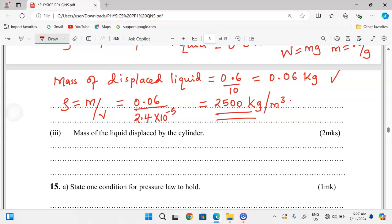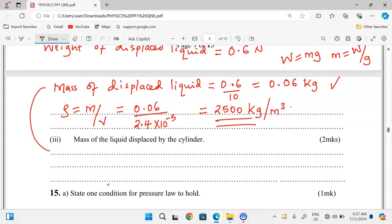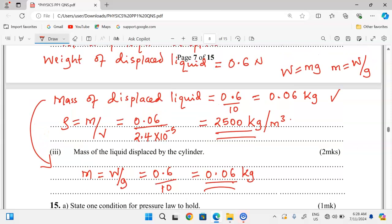And finally, there is mass of the liquid displaced. Remember mass of the liquid displaced has already been obtained here. Mass of the liquid displaced, I just need to transfer the value to this point, but a student is supposed to show that a mass has been obtained when weight has been divided by gravity. 0.6 divided by 10 to give us 0.06 kilograms. So this is mass in SI units for the liquid which was displaced by the cylinder. Thank you so much for following.